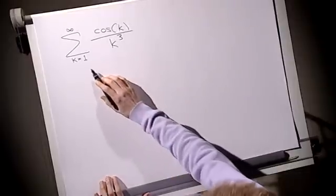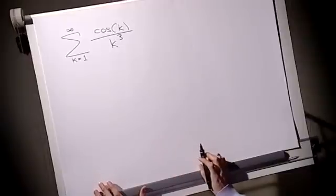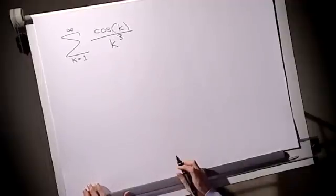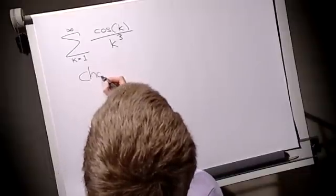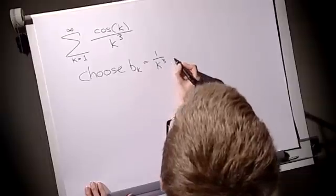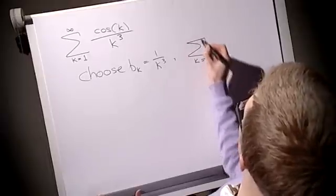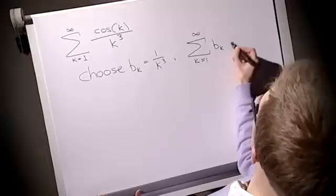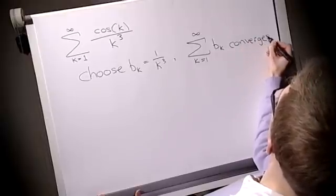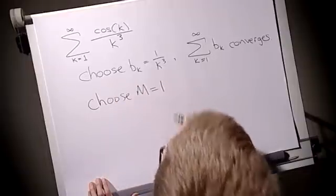So let's do an example now. Here's an infinite series, sum of 1 to infinity, cos k over k cubed. So we stare at this a while, and we decide it looks a lot like 1 over k cubed. Let's choose bk equal 1 over k cubed. Is that going to be any good? Yes. The sum from 1 to infinity of this bk converges. So that's good for us. What about m? We're going to choose, in this case, m equal to 1.